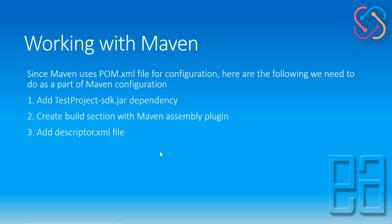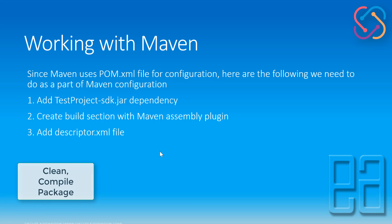Before doing that, here are the things we need to know while working with Maven. Since Maven uses the pom.xml file for configuration, the first thing is we need to add the Test Project SDK jar dependency — that's very important because this jar dependency is what gives us all the references. Then we need to create a build section with the Maven assembly plugin, which is where you can do packaging, cleaning, and compiling your project.